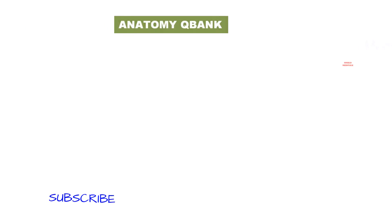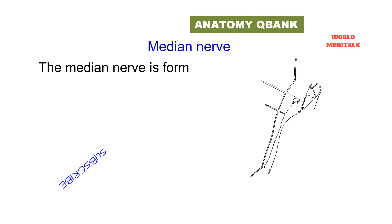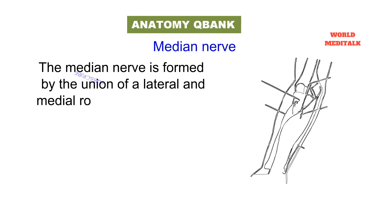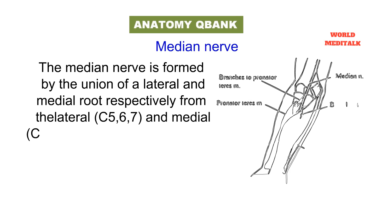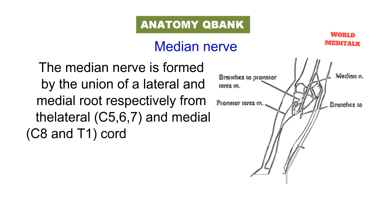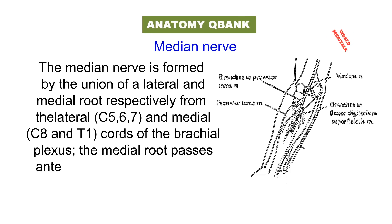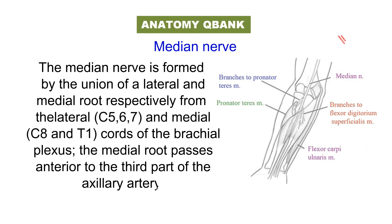Let's talk about the anatomy of the median nerve. The median nerve is formed by the union of lateral and medial roots, respectively from the lateral cervical 5, 6 and 7, and medial cervical 8 and thoracic 1 cords of the brachial plexus. The medial root passes anterior to the third part of the axillary artery. The nerve descends lateral to the brachial artery, crosses its medial side, usually passing anterior to the artery.